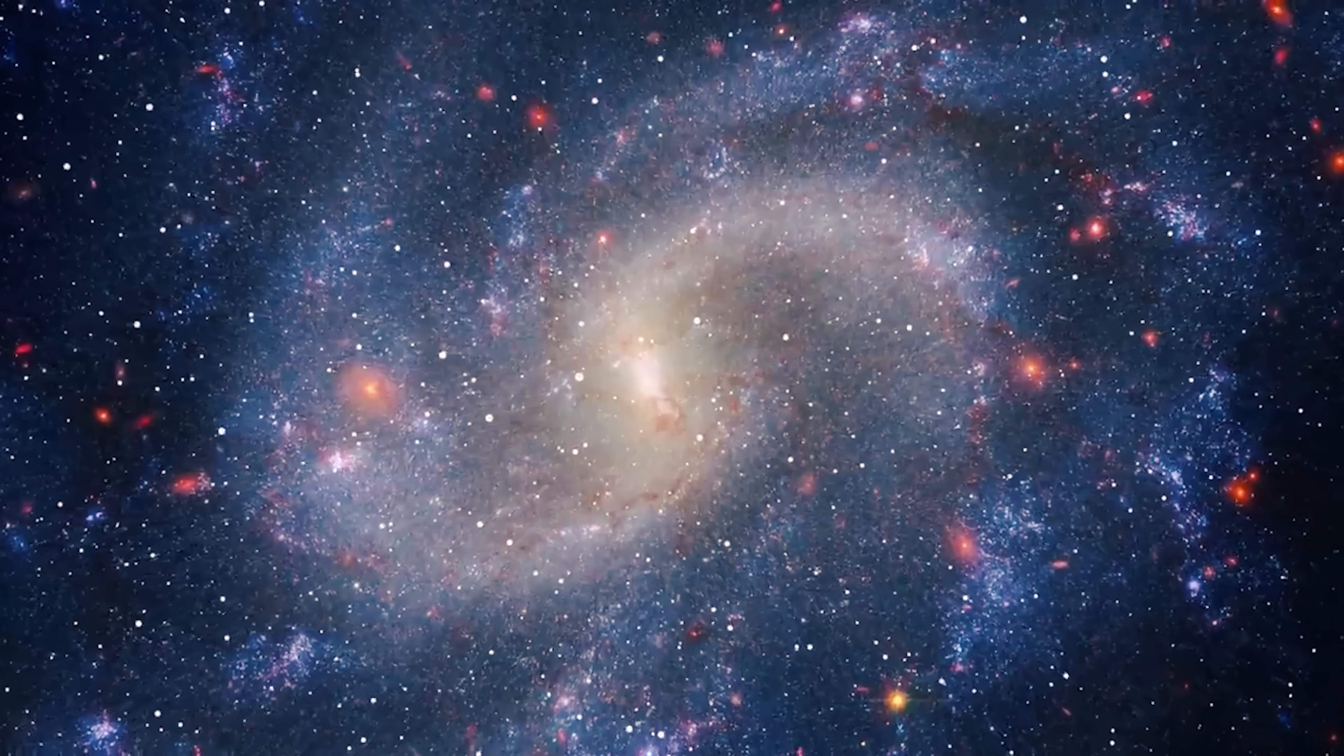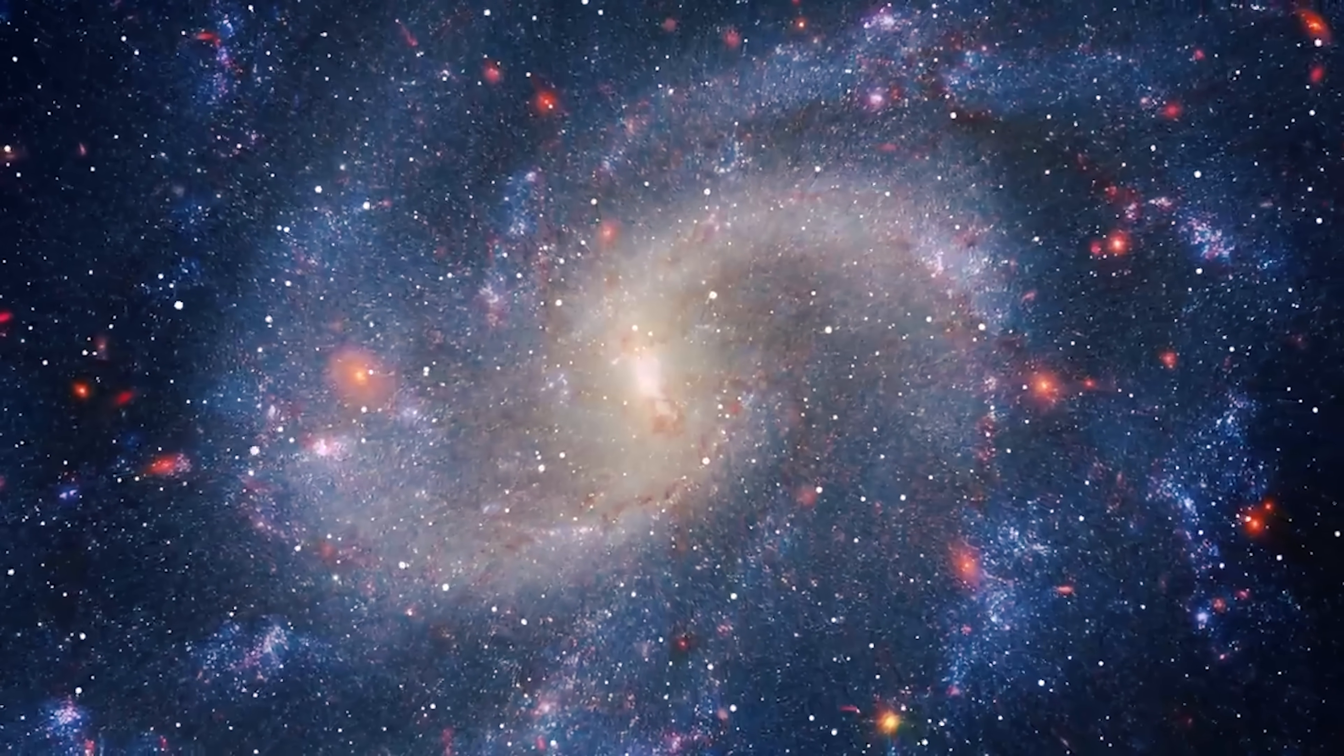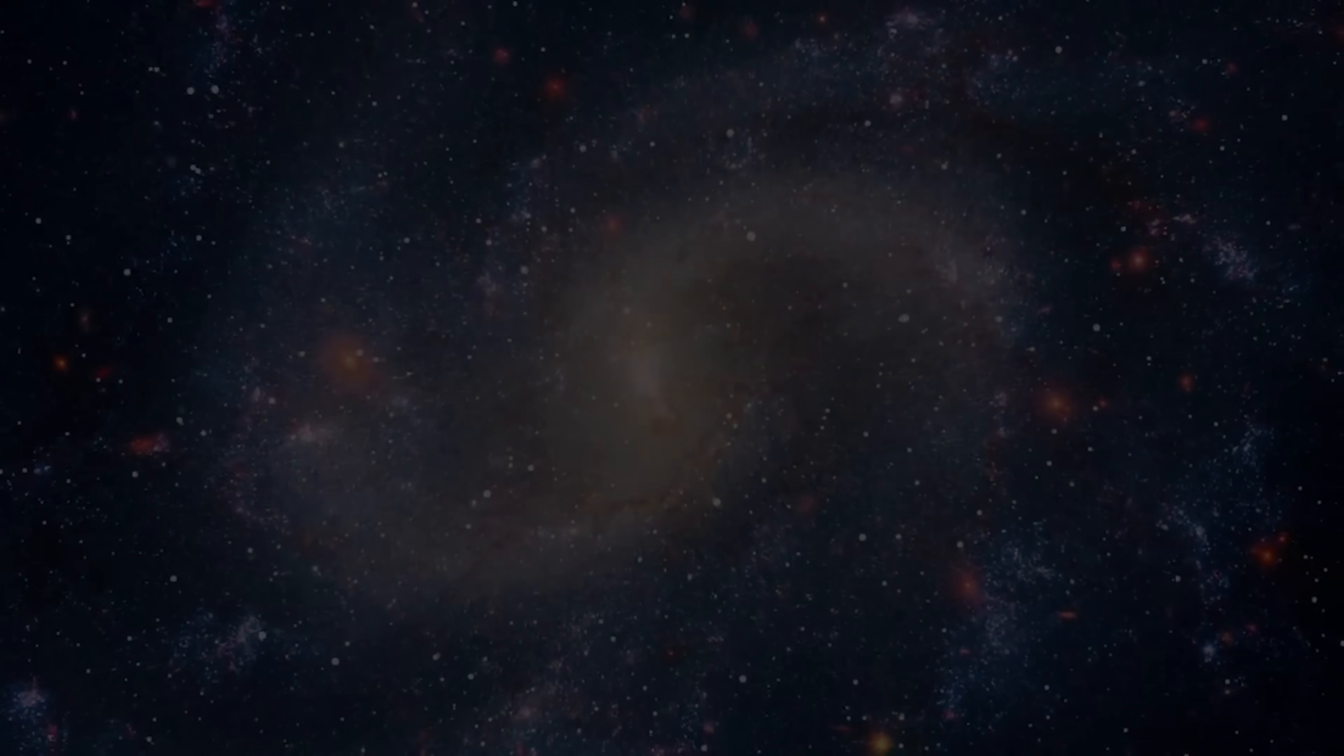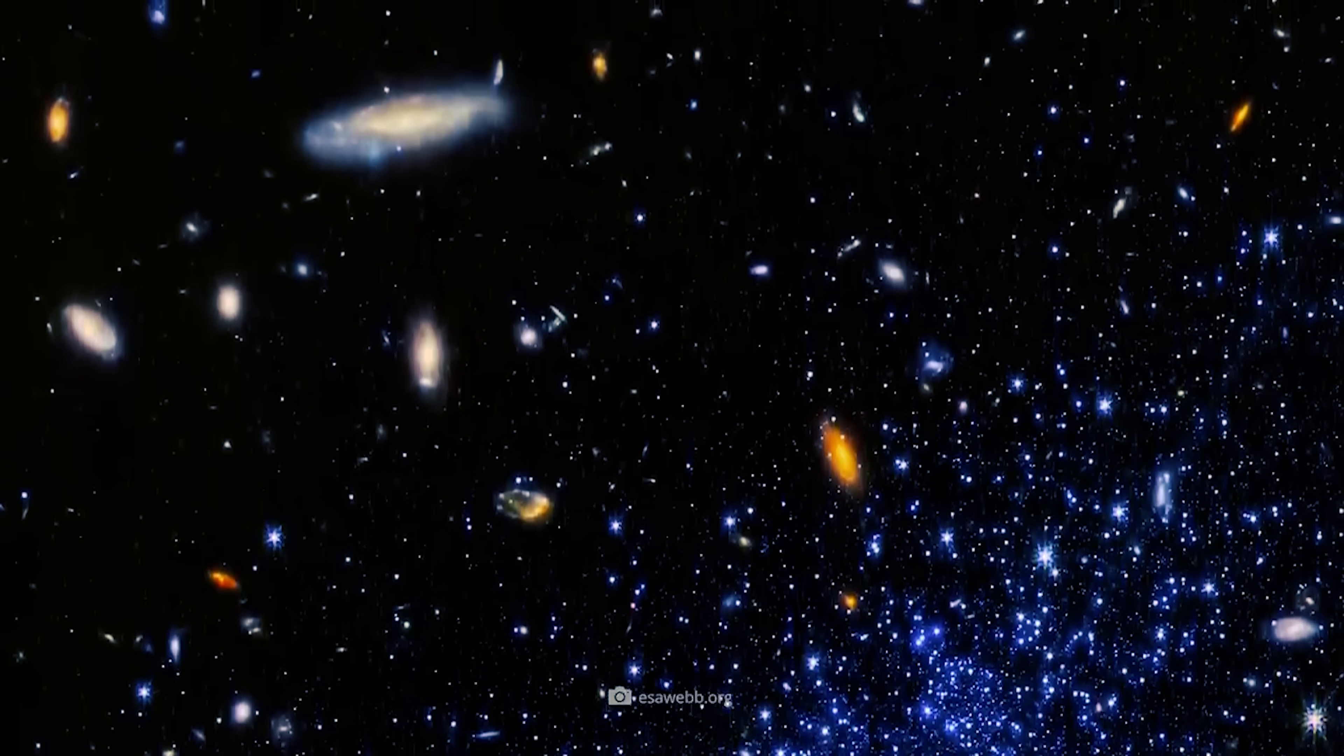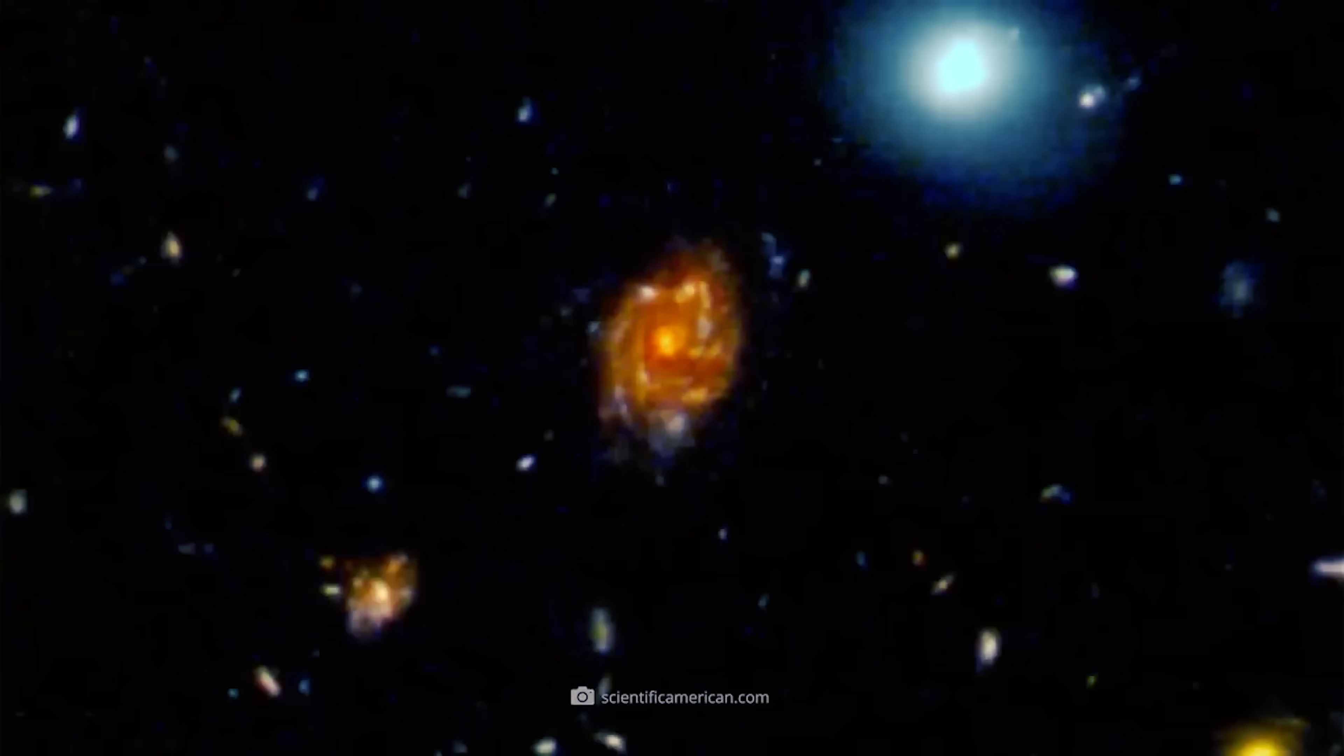Our models say spiral galaxies are patient builders. They grow over billions of years, feeding on a steady trickle of gas from surrounding star clusters. But those mergers usually scar their shapes, twisting their graceful spirals into messy, chaotic blobs.